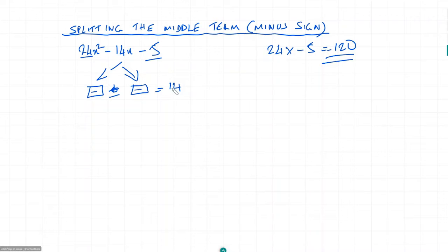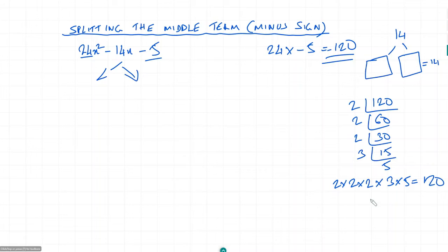Splitting the middle term using prime factorization. Finding the prime factorization of 120: 2 times 60, 2 times 30, 2 times 15, 3 times 5. So 120 equals 2 times 2 times 2 times 3 times 5.